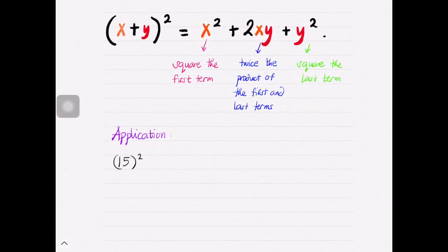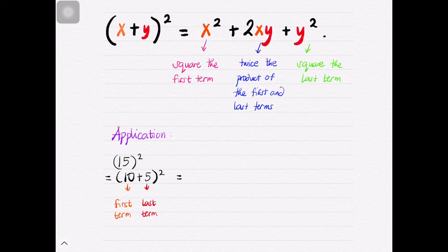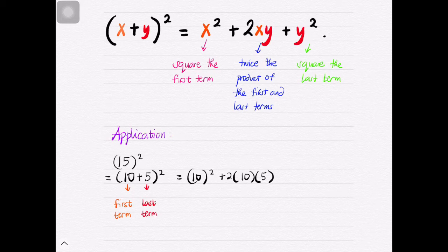Finally, we can now discuss one of its applications. What if we are to square 15? Knowing that 15² is the same as (10 + 5)², we can consider 10 to be the first term and 5 to be our last term. Applying the algorithm, we'll have 10 squared as our first term, plus twice the product of the first and last terms — that's 2 times 10 and 5 — plus the square of the last term, which is 5².